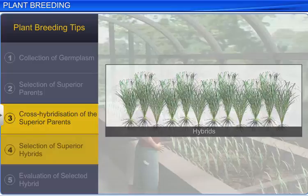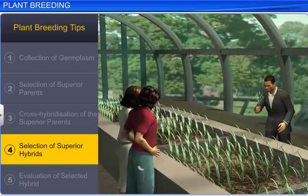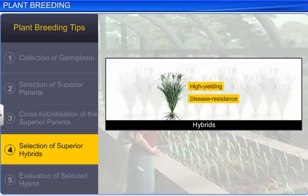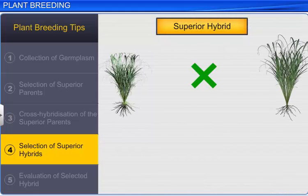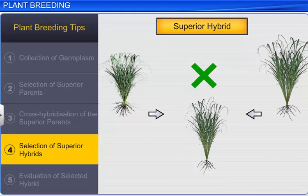The fourth step is the selection of superior hybrids. The desired hybrid is selected from the thousands of hybrids formed during cross-breeding that possess the characters of both its parents. Hence, it is considered superior to its parents. The hybrid is then allowed to self-pollinate till it forms a pure line of homozygous plants.